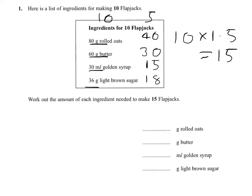So put them together and you'll have exactly what you need for 15. So 80 and 40 gives me 120 grams for rolled oats. 60 and 30 gives me 90 grams of butter. 30 and 15 gives me 45 milliliters of golden syrup.